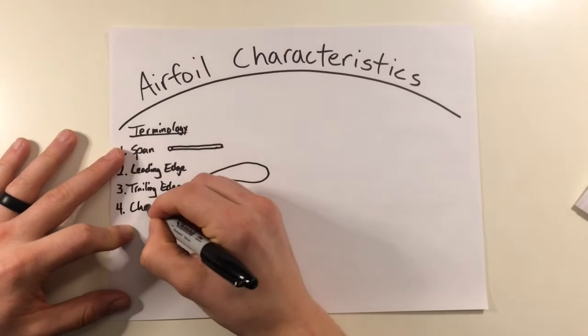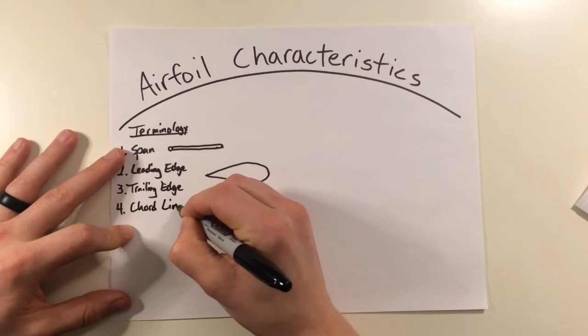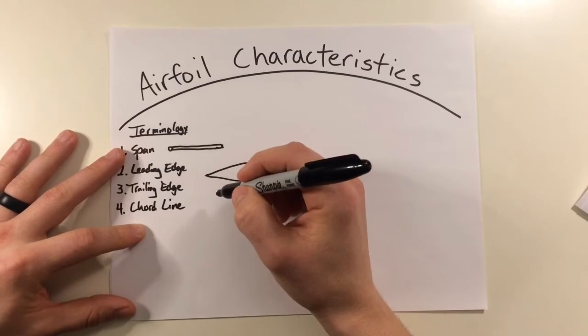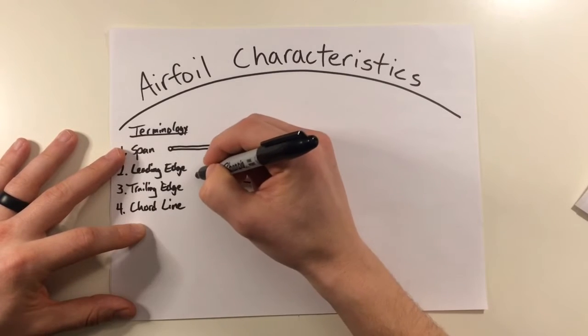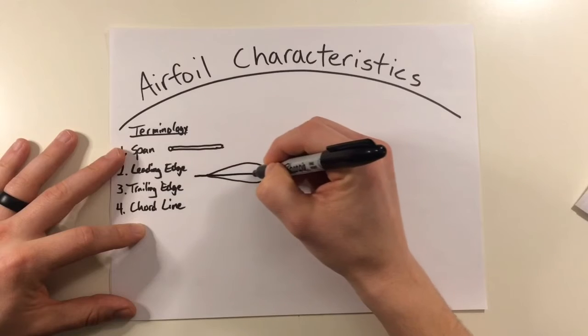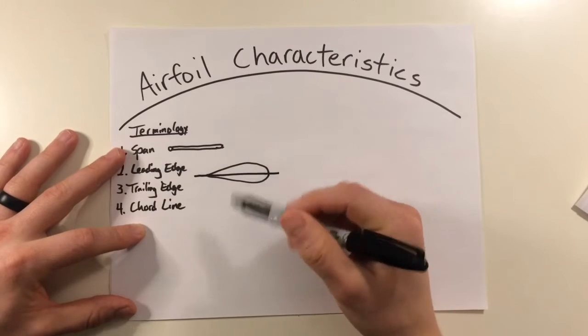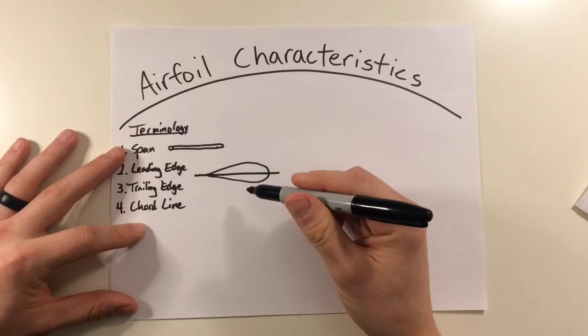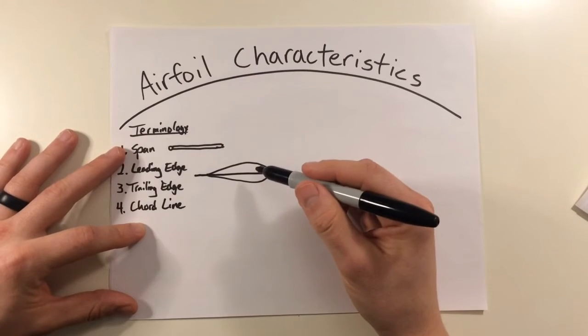Next up, we'll have the chord line. Now, the chord line is just going to be an imaginary line that goes from the leading edge to the trailing edge. So, just right there through the middle. And this is important because it's the reference point that we use for angles of attack and angles of incidence.